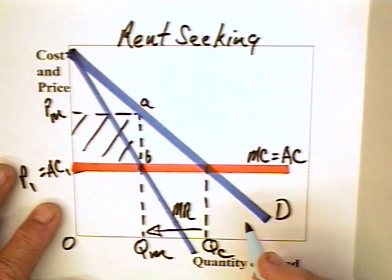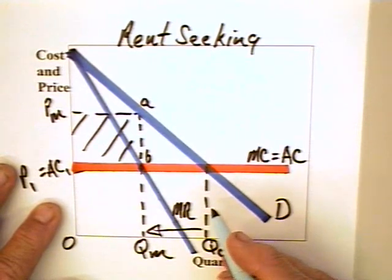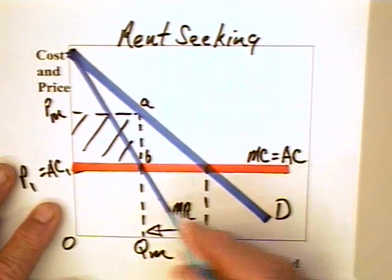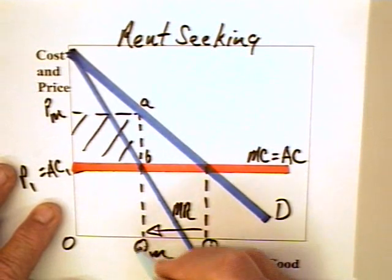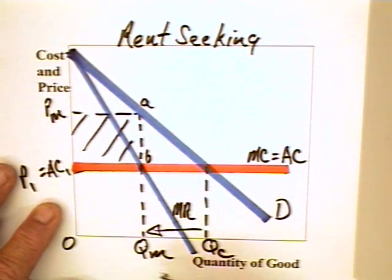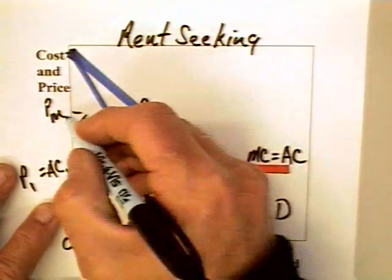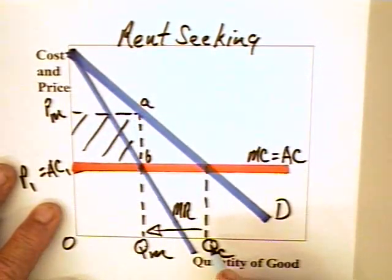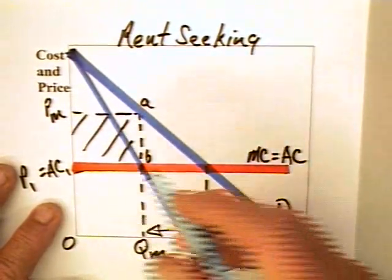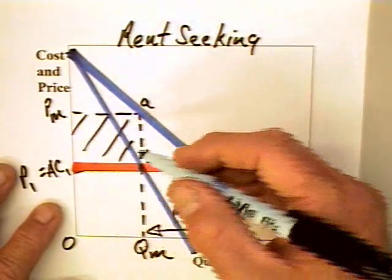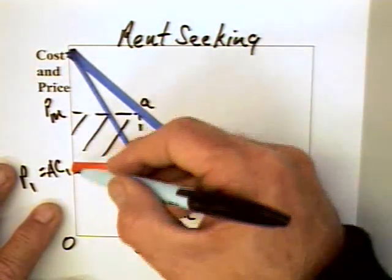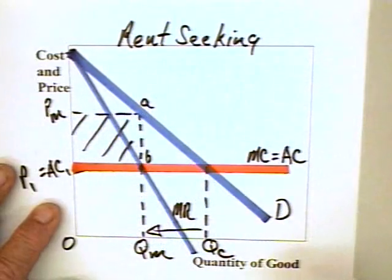You can imagine that competitors would like nothing better than to go to government and get government to form the cartel for them, or somehow restrict output to QM, because then that allows them to price at PM. If the government is involved and acts as an enforcer, then these profits can be split among the various producers.